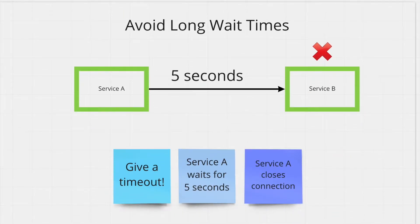This is where timeouts come in. With timeouts, you can tell service A to wait up to five seconds for a response from service B. Now if A cannot get a response back before that time, it's just going to close the connection and move on to the next thing. This makes sure that service A is available and not occupied with that one HTTP call for a very long time.